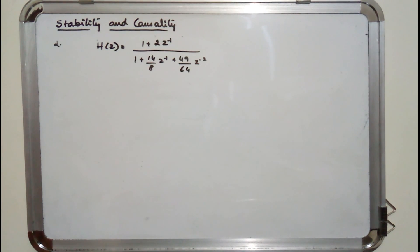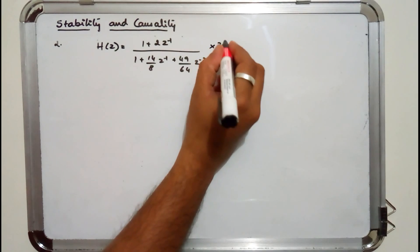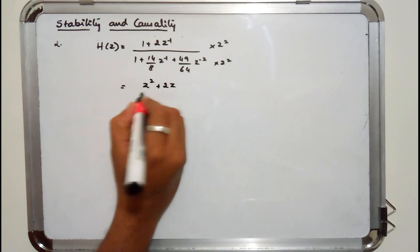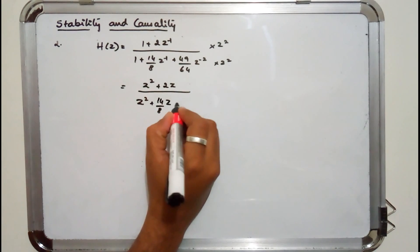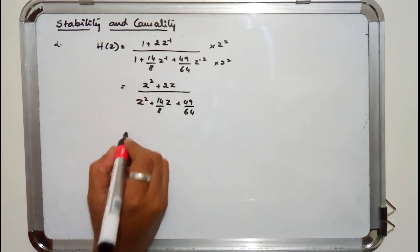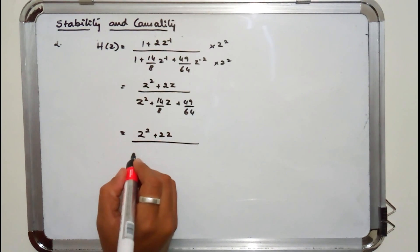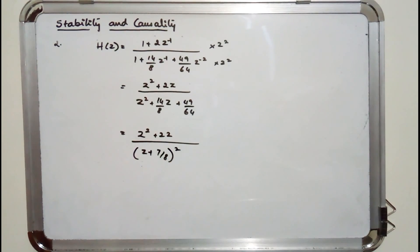In this next problem, the transfer function is given in the z-inverse domain. To find the poles, convert everything to the z-domain by multiplying the numerator and denominator by z². This gives H(z) = (z² + 2z) / (z² + 14/8 · z + 49/64).